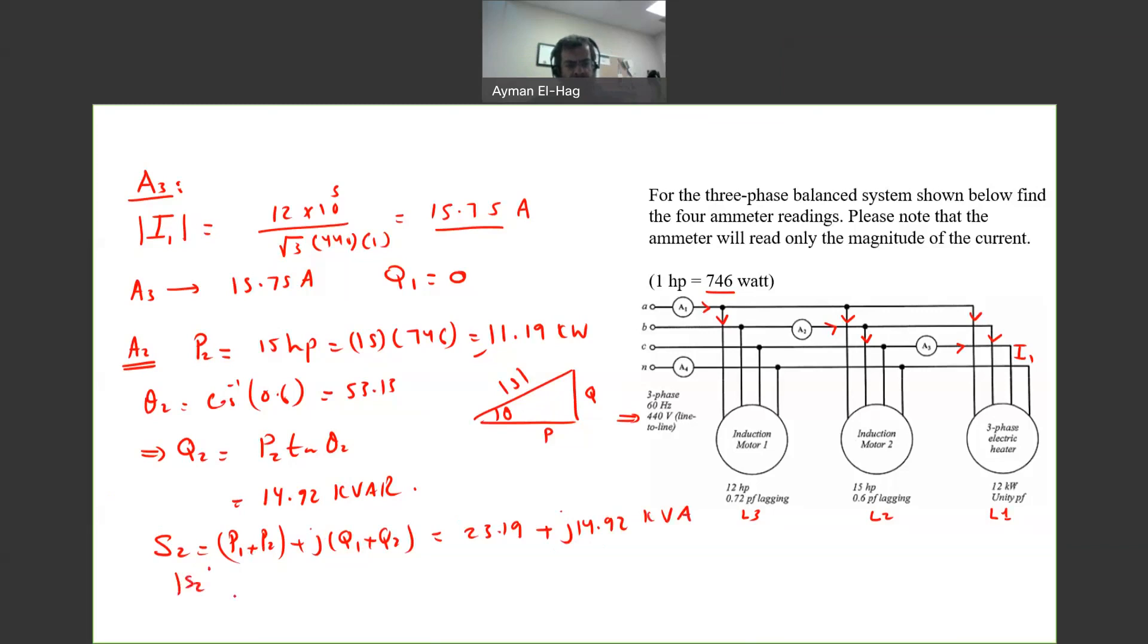The magnitude of S2 is equal to the square root of 23.19 squared plus 14.92 squared, which gives me 27.575 kVA.